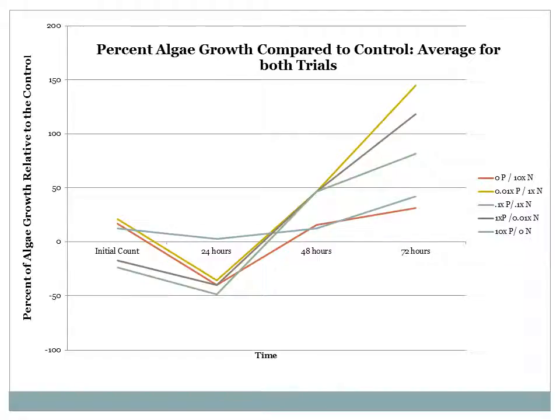Perhaps a clearer way to understand the algae growth is by comparing each setup to the control. In this graph, I average the two trials and show the algae growth as a percent increase or decrease from the control. For example, all the setups with some level of added fertilizer had more growth at the end of the experiment than the control, shown by the fact that all those setups have positive percent growth rates. In the final count, the 0.01x phosphorus and 1x nitrogen has the largest algae concentration at 145% growth from the control, whereas the 0x phosphorus and 10x nitrogen has the smallest algae concentration at only 32% growth from the control.